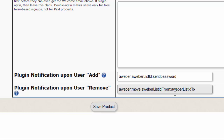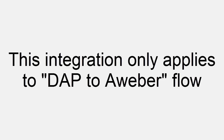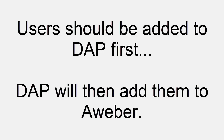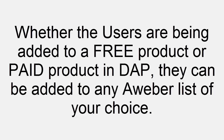Just make sure to separate each of these fields with a colon, because colon is the delimiter. Please note that this new integration only applies to a Dapp-to-Aweber flow. If users are being added to a Dapp product first and you want Dapp to automatically add the user to an Aweber list, then use this new integration — whether it's a paid product or a free product, Dapp will be able to automatically add the user to the configured Aweber list.